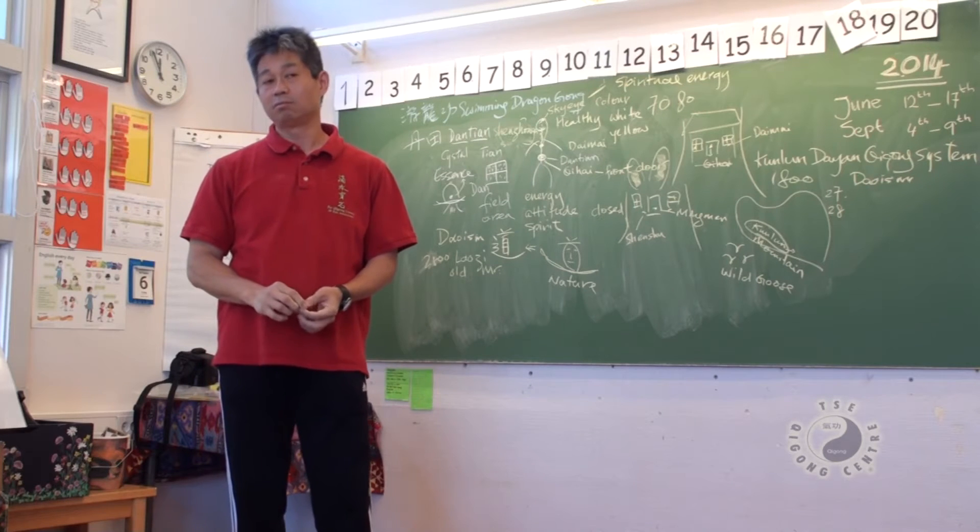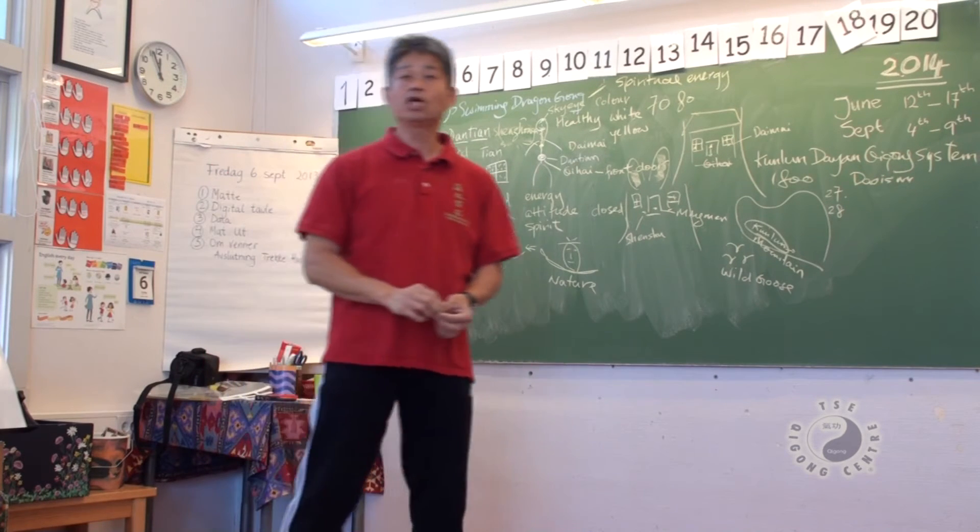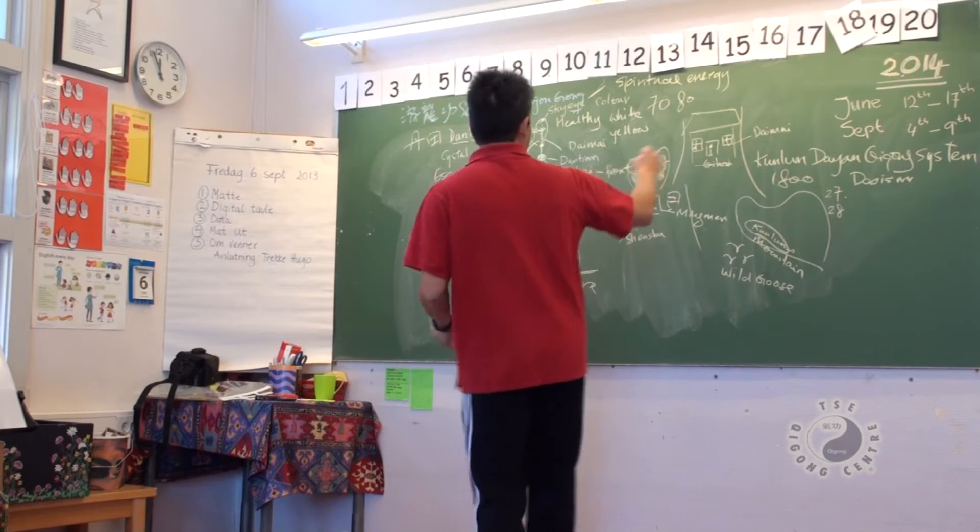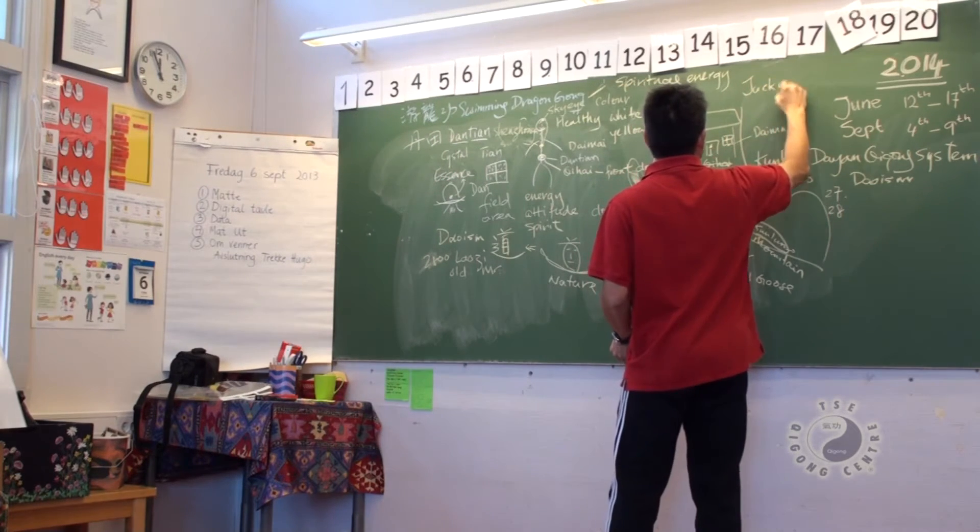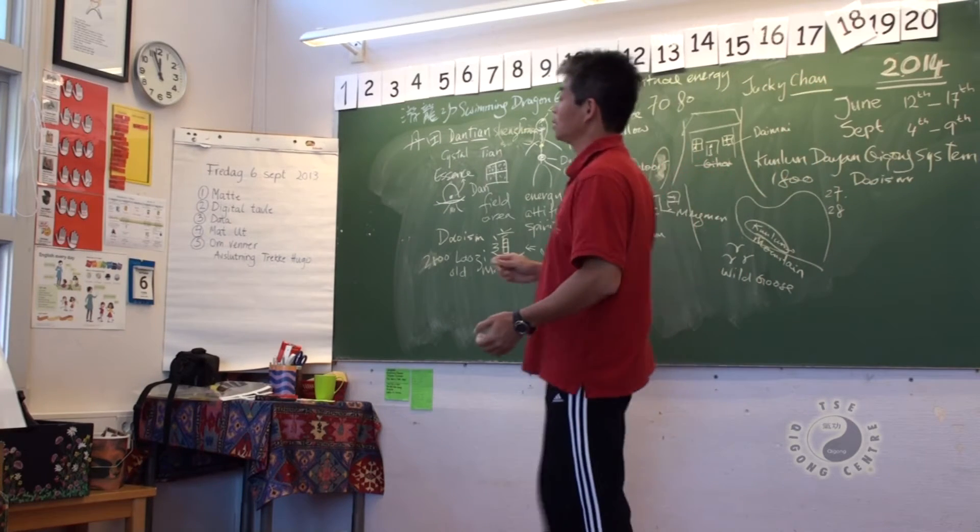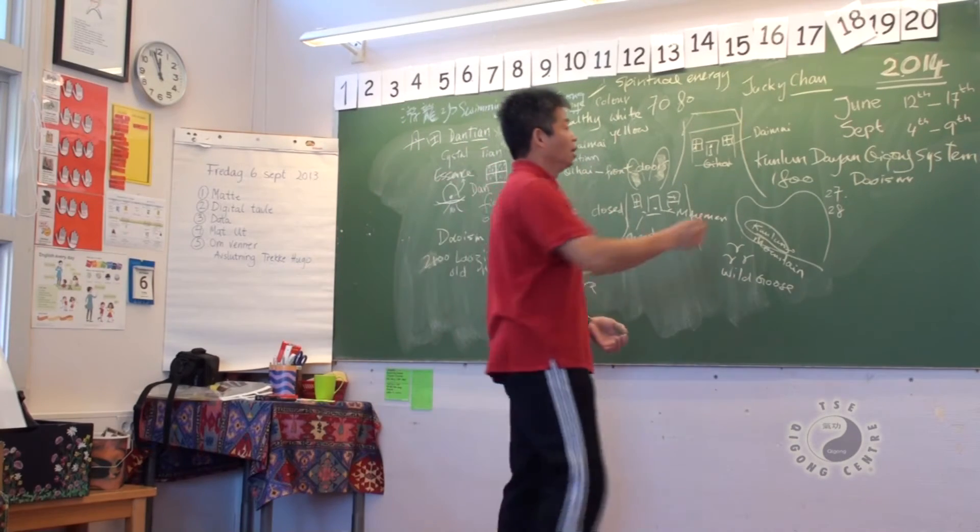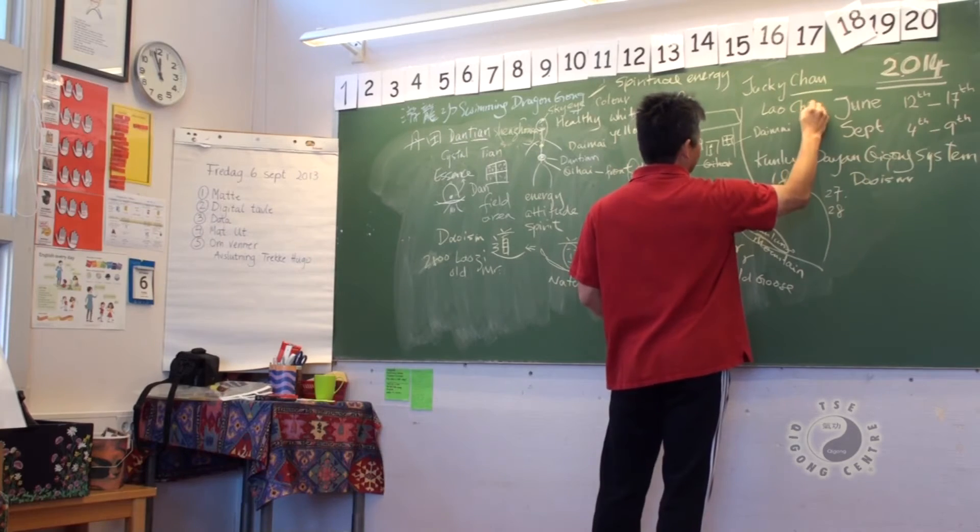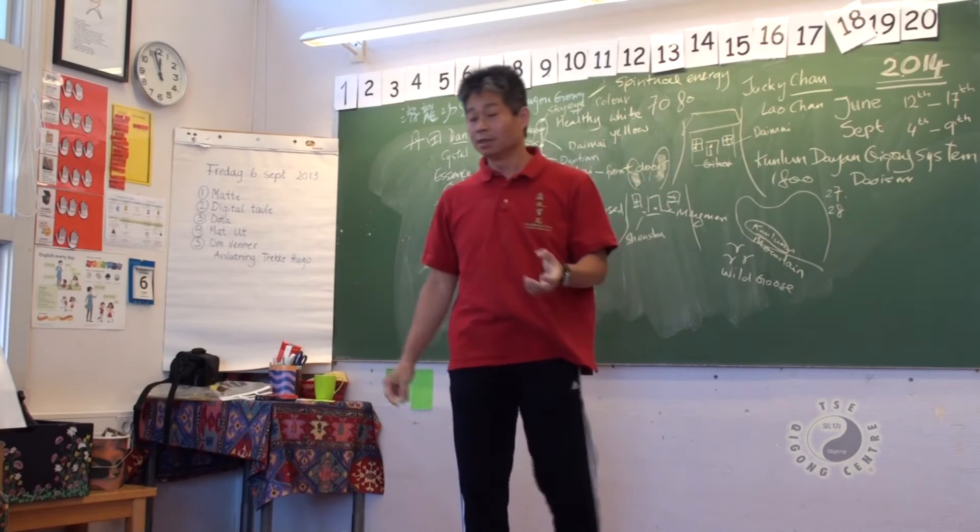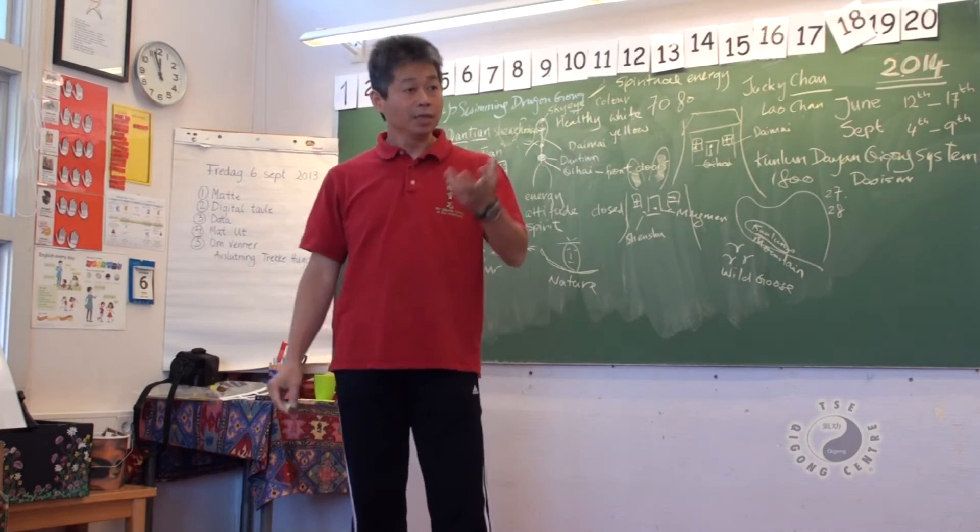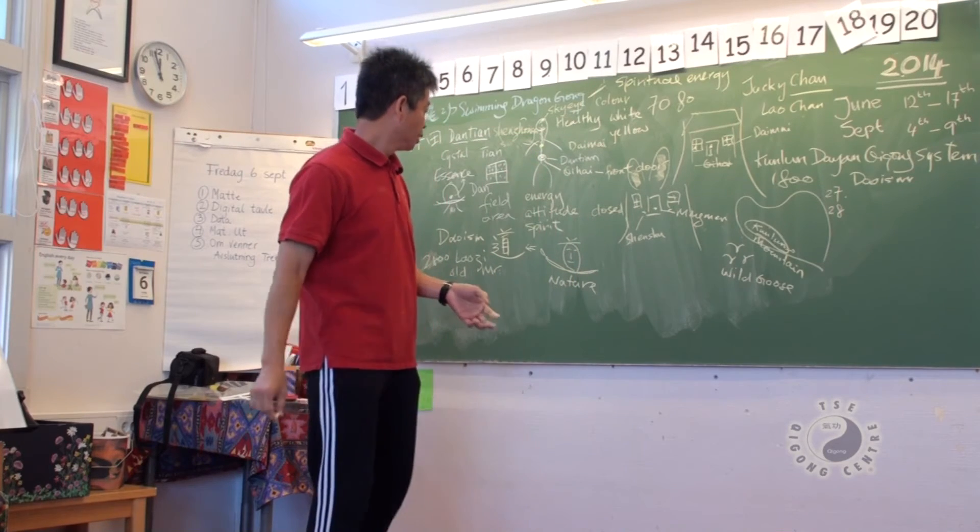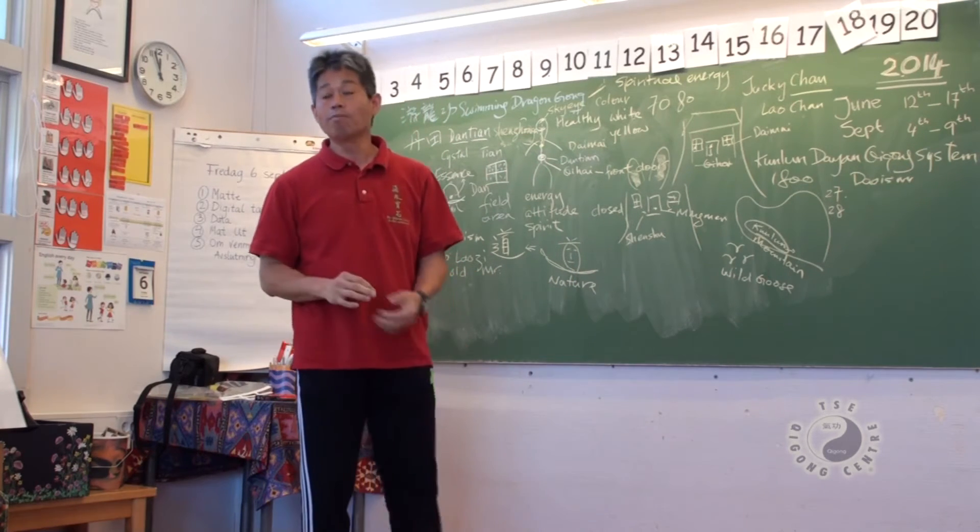When we call somebody Lao, Lao means respect. In China, like Jackie Chan. Chan is his family name. He's older, over 60. So in China, people will call him Lao Chen. But the proper pronunciation should be Lao Chen. That means he's respected with experience. Lao means he has a lot of knowledge.